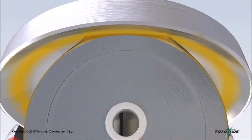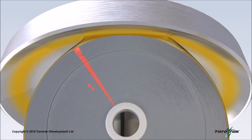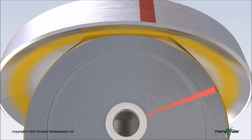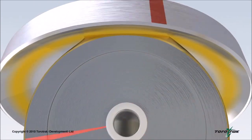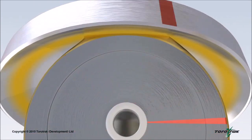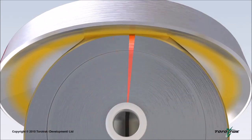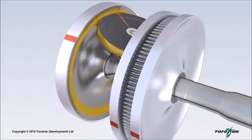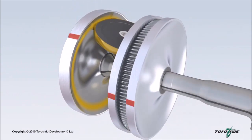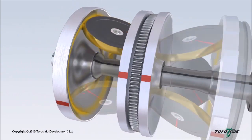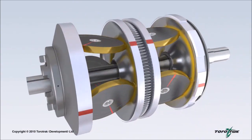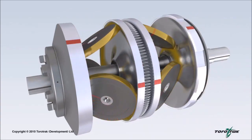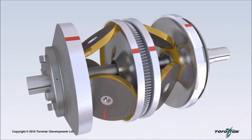Torque, or drive, is transmitted through the contact points formed between the rotating disks and rollers by a specially formulated oil known as traction fluid. The rotating rollers and disks are forced together, trapping the fluid at the contact points. The resulting high contact pressure makes the fluid thick, or viscous, enabling torque to be transmitted without physical contact between the rotating surfaces.